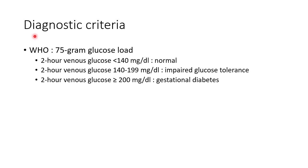Now let us see about the diagnostic criteria of GDM. WHO recommends a 75 gram glucose load for diagnosing GDM. If the 2-hour venous glucose is less than 140 mg/dL the patient is normal; between 140 to 199 mg/dL indicates impaired glucose tolerance; and greater than or equal to 200 mg/dL indicates gestational diabetes mellitus.